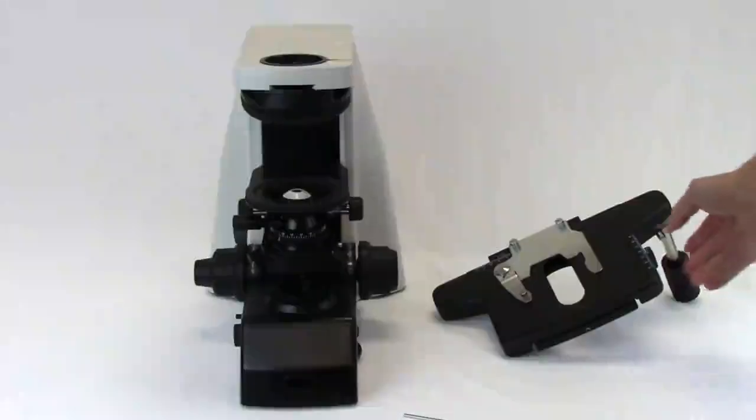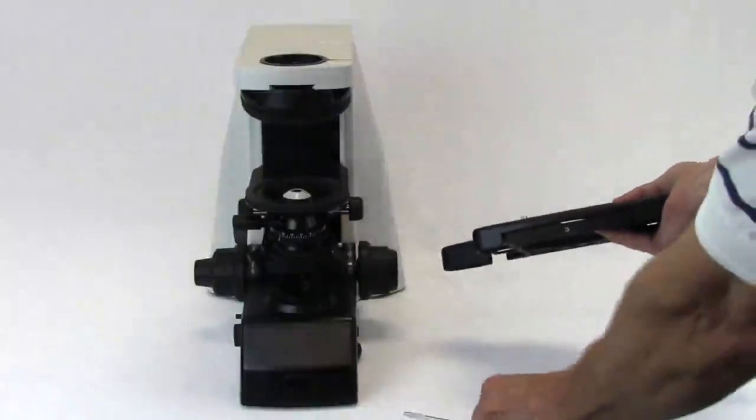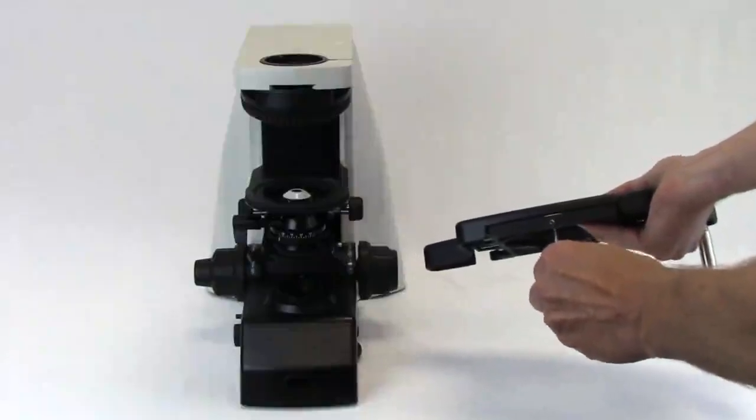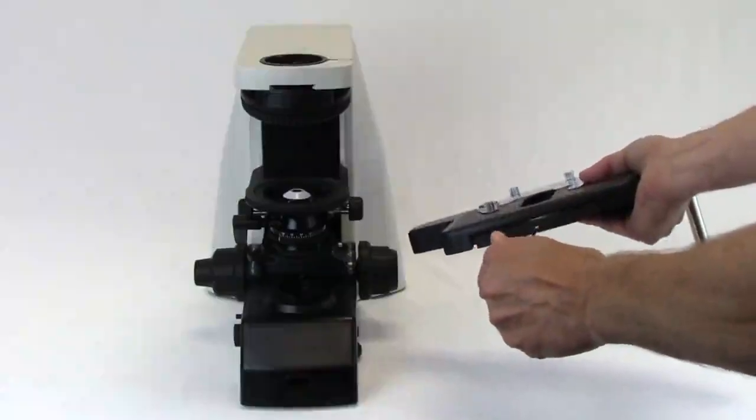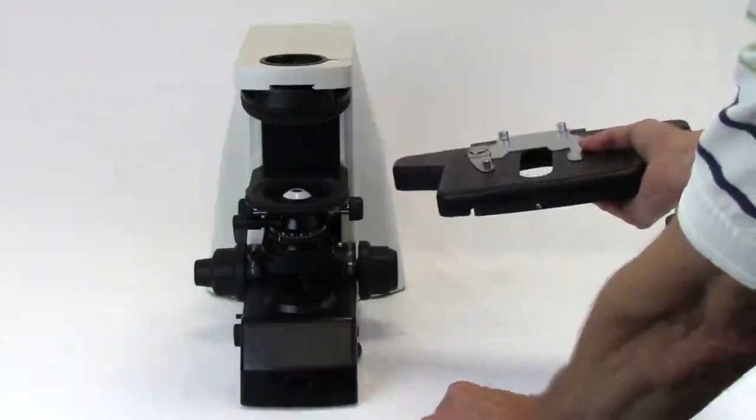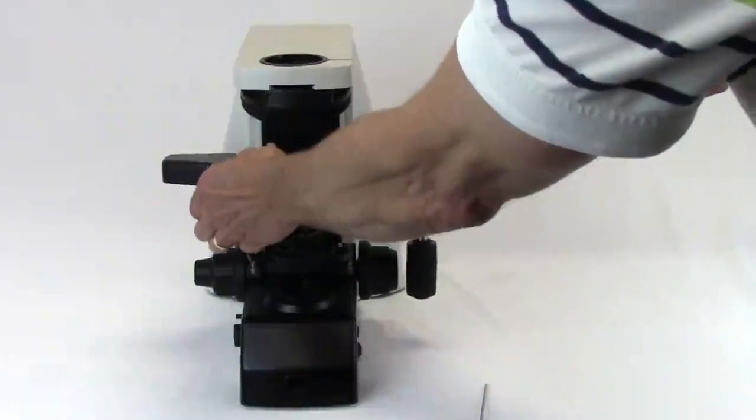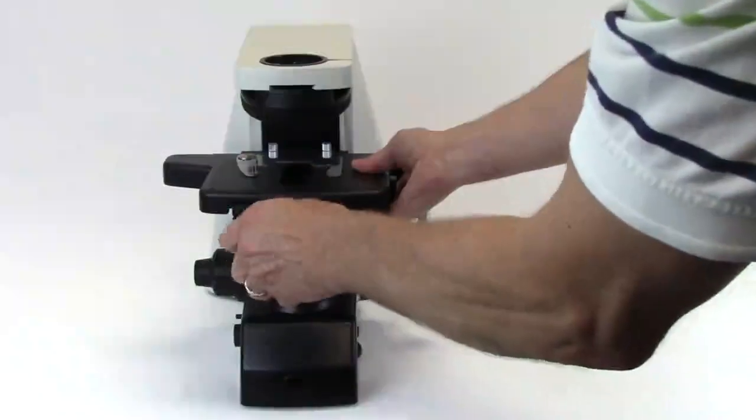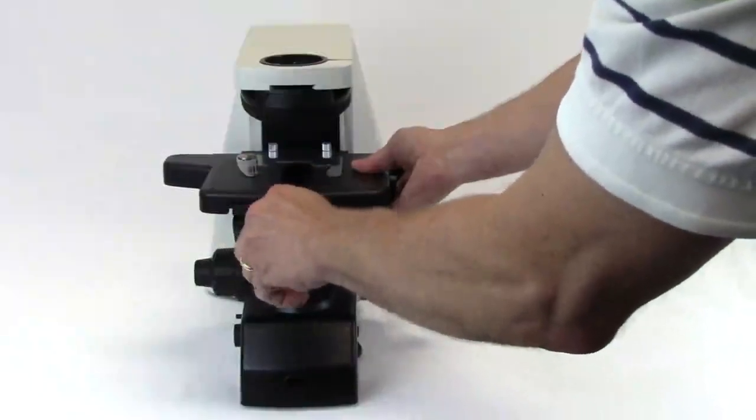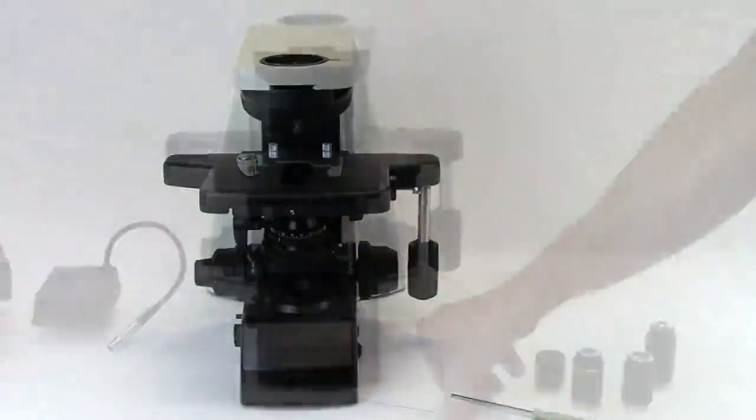Installing the stage. Using the 3mm hex wrench, loosen the lock screw on the front of the stage. Position the XY movement knobs to the right, align the circular mount on the bottom of the stage with the circular bracket on the condenser stage carrier, and set the stage in place so that it is centered over the condenser below. Retighten the lock screw on the front of the stage.